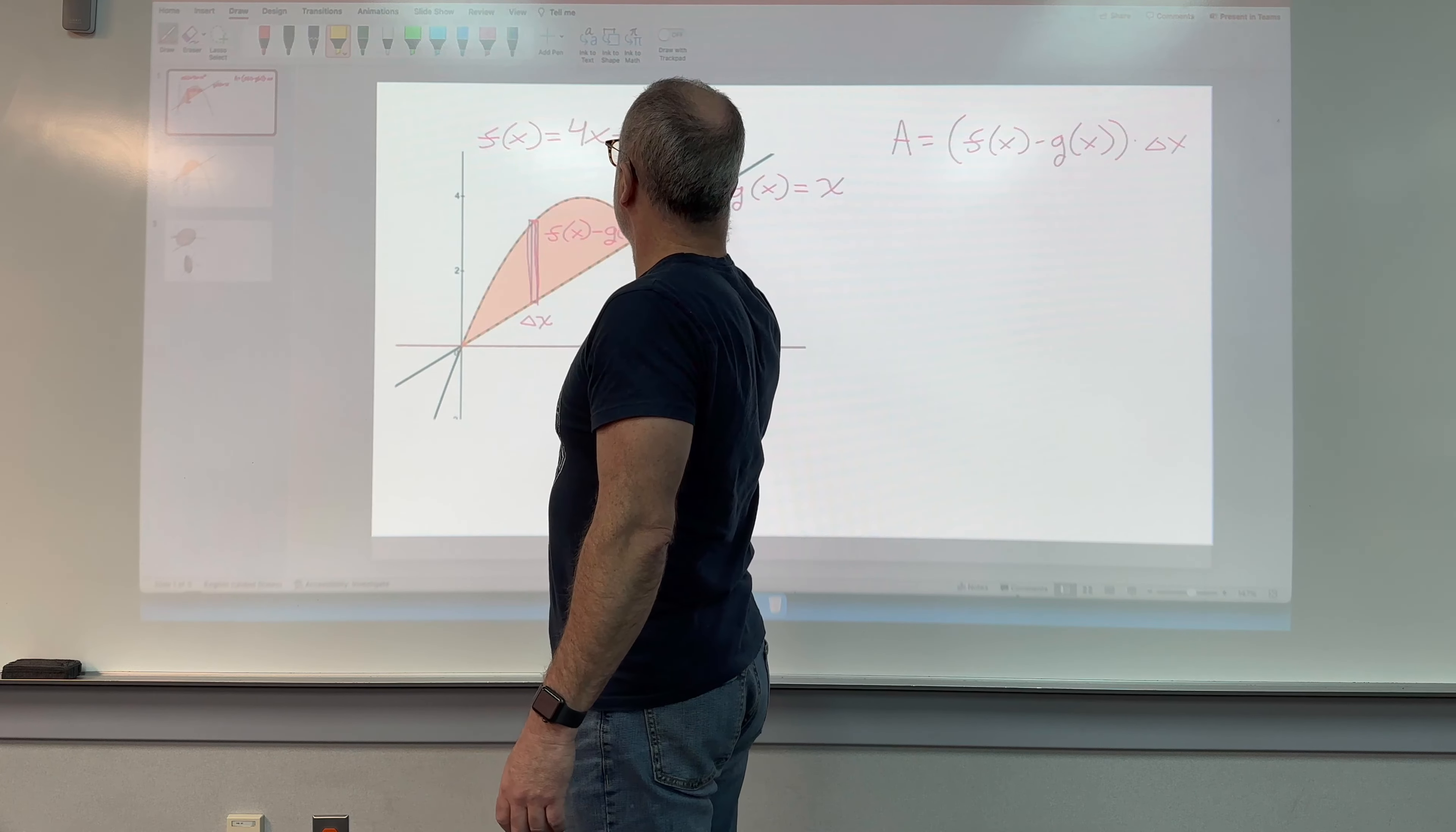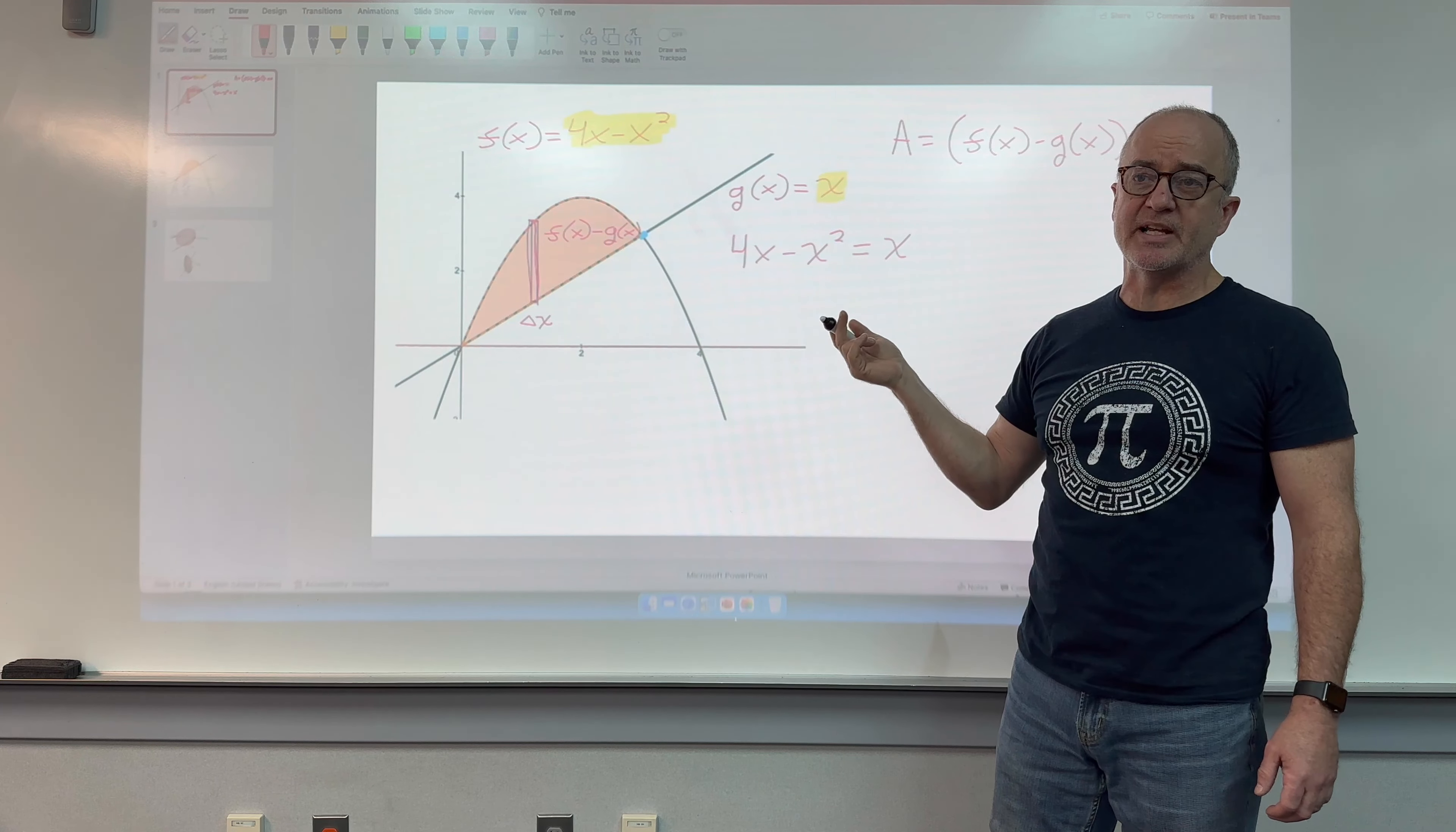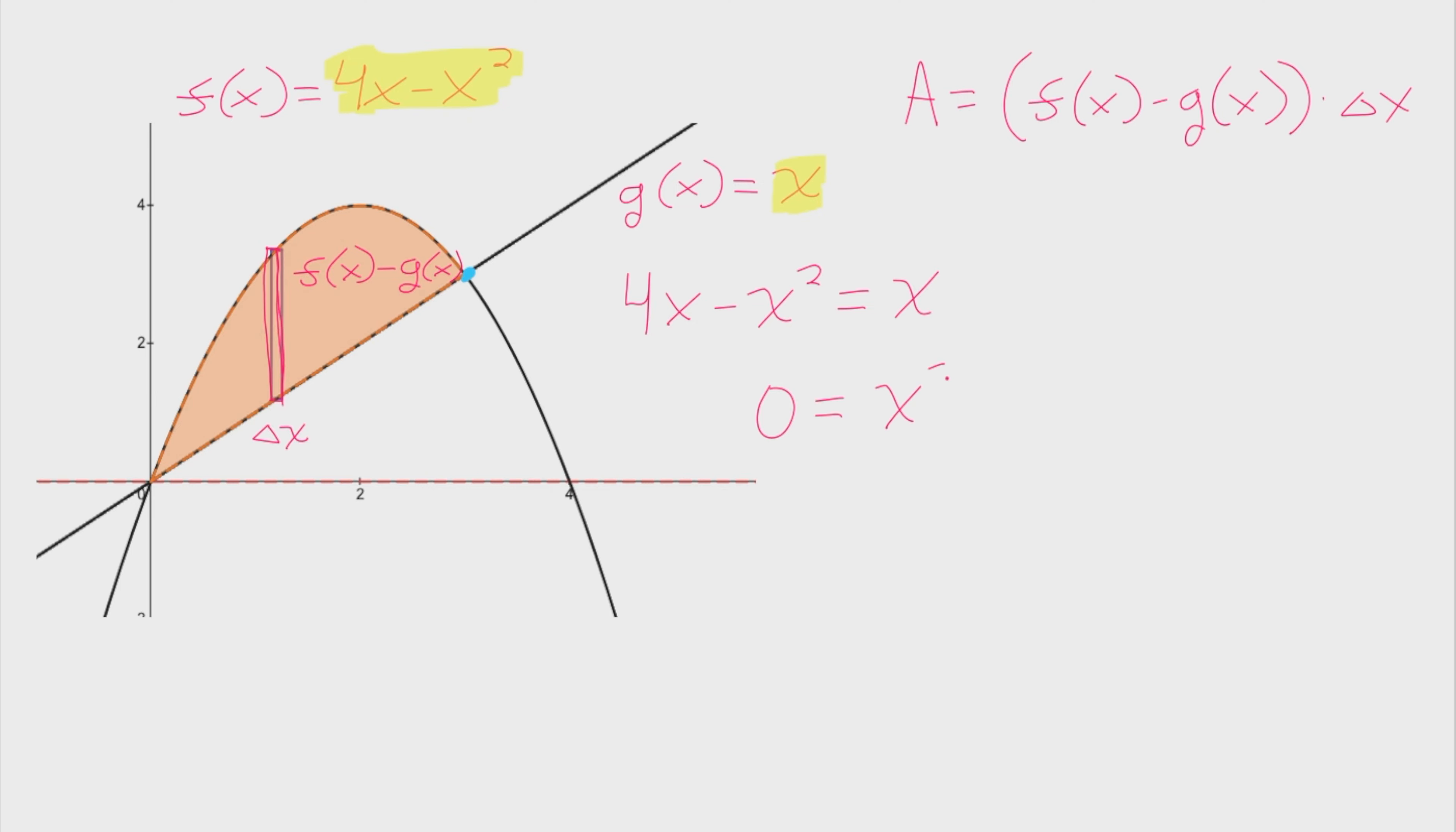If I were just given these equations with directions that would say find the area bound by these two functions, bound meaning closed off, I'll have to figure out where they meet. And the simplest way to do that is to set the functions equal to each other. So I'm going to have a new equation to solve: 4x minus x squared equal to x. I'm going to rewrite this as a quadratic. I'm going to move everything to the right side of the equation, giving me 0 equals x squared minus 3x.